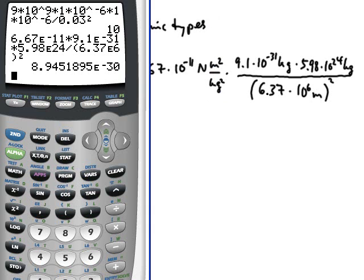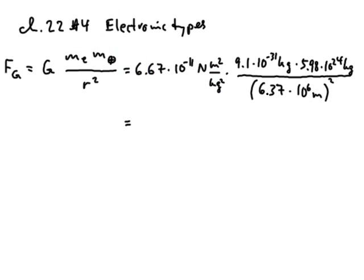And if I did everything right, that is the correct answer: 8.9 times 10 to the negative 30. So 8.9 times 10 to the negative 30, and the units would have to be newtons—square meters and kilogram squared will cancel.